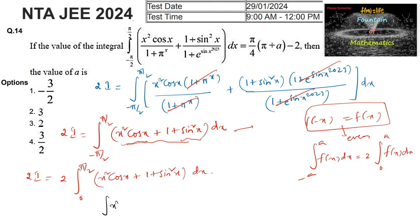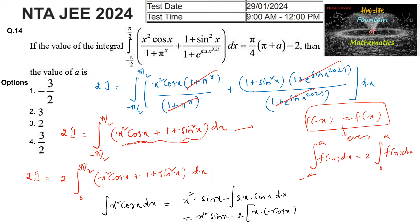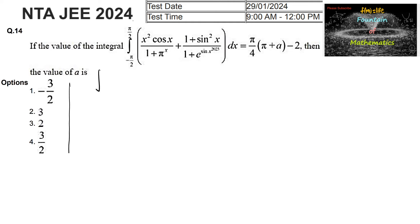Consider ∫ x² cos x dx by integration by parts: x² · sin x − ∫ 2x · sin x dx. Then x² sin x − 2[x · (−cos x) − ∫ 1 · (−cos x) dx]. This gives ∫ x² cos x dx = x² sin x + 2x cos x − 2 sin x + C₁.